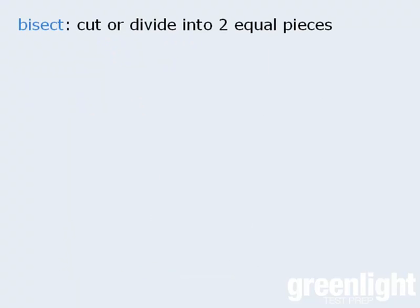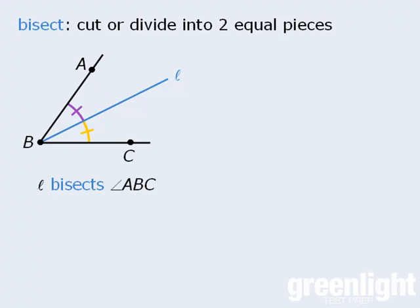Here's another definition. To bisect is to cut or divide something into two equal pieces. For example, let's say we take an angle and draw a line that splits the angle into two angles. If those two angles are equal, which we can denote as follows, then we can say that line L bisects angle ABC, or we can say that line L is the bisector of angle ABC.